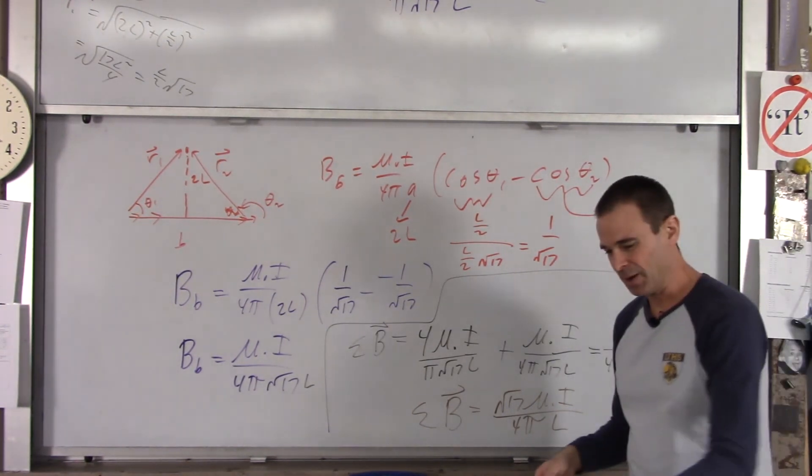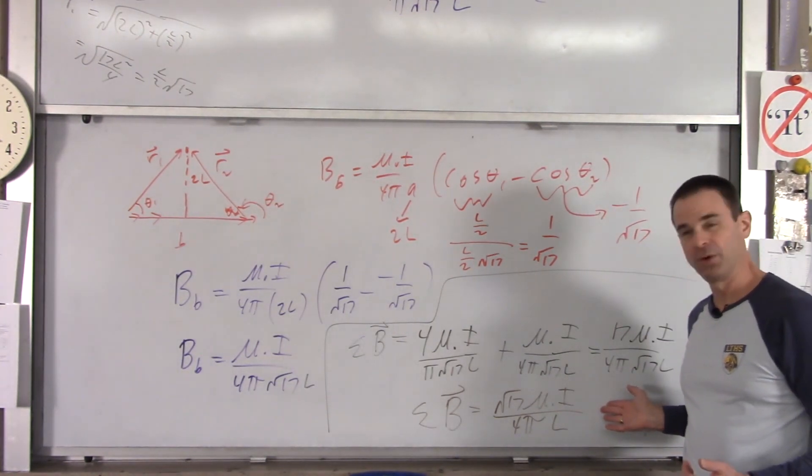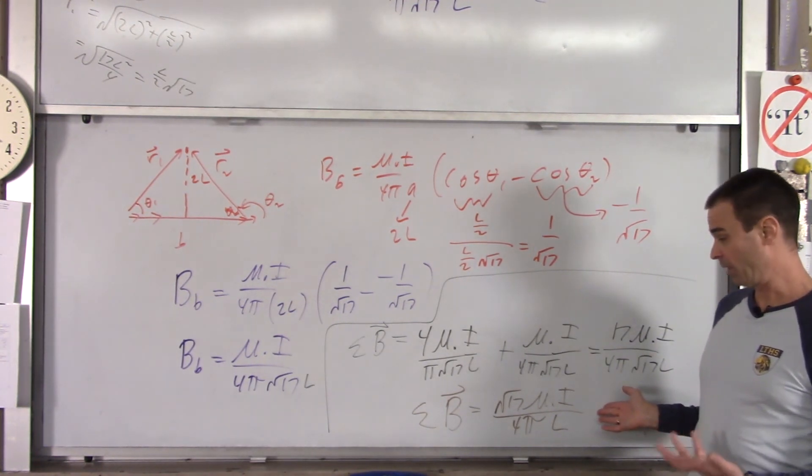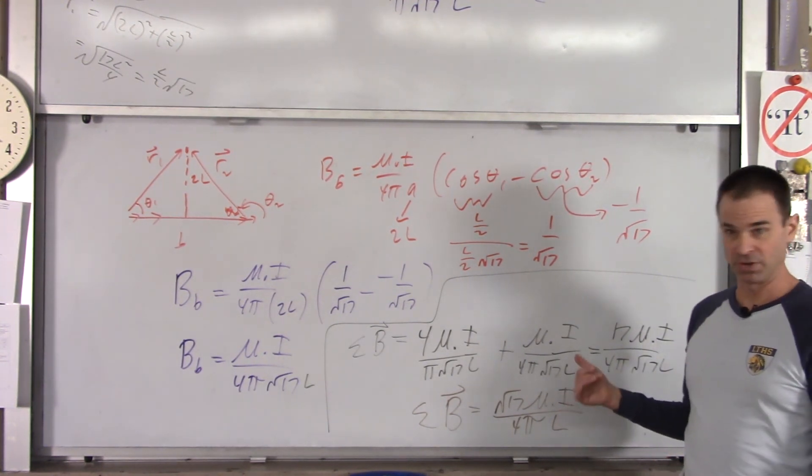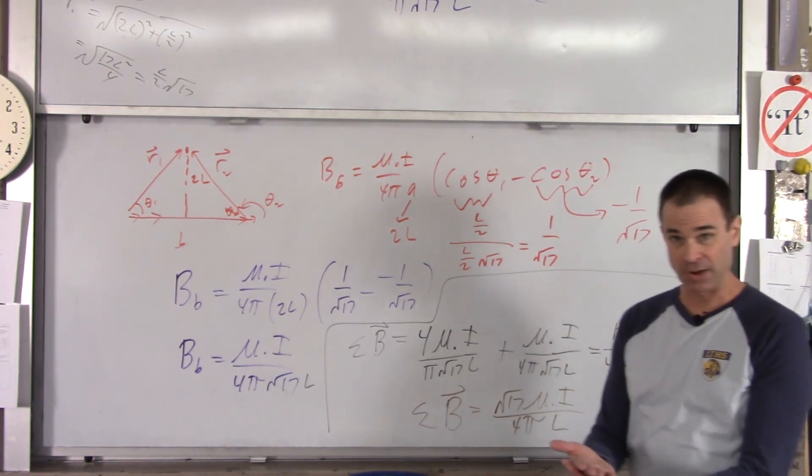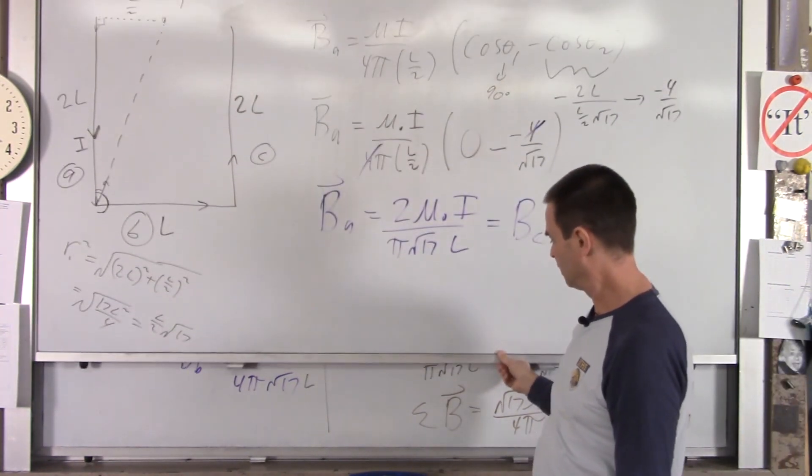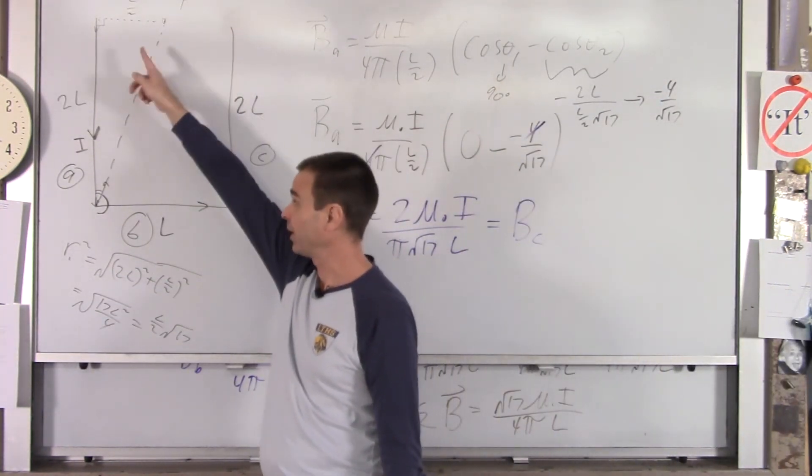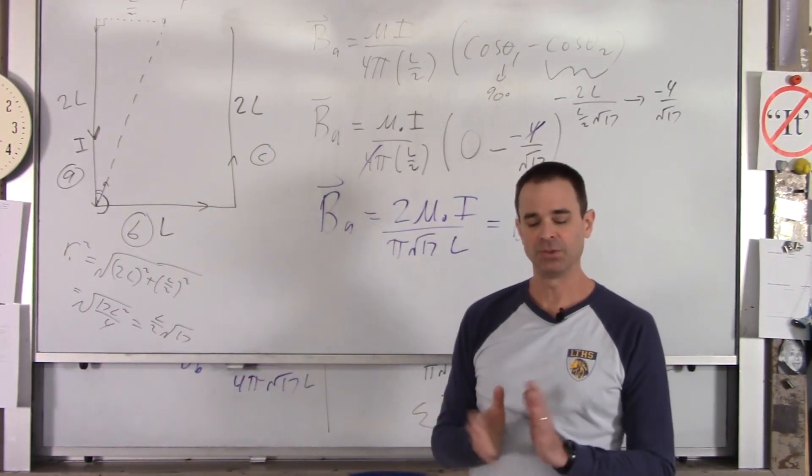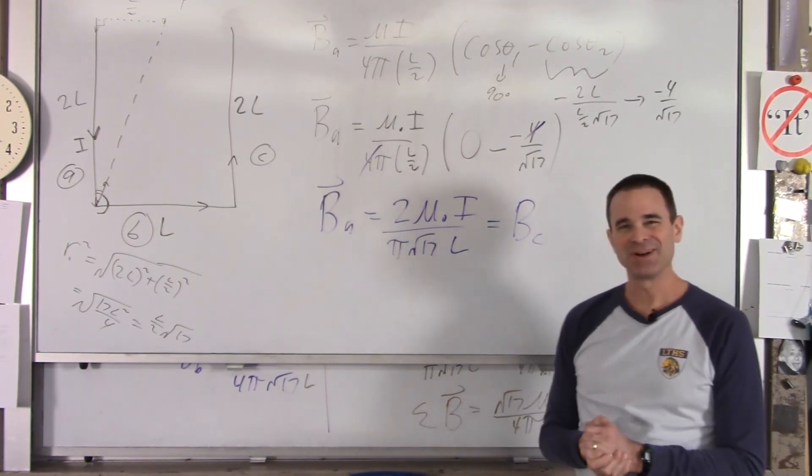So again, we're using the results of the Biot-Savart law to come up with a numerical answer. And at this point, if I gave you numbers for I and L, you'd get an actual value in your calculator. But to get a result for what is the magnetic field at that point created by this shape of wires. So again, we're using the result of the Biot-Savart law to figure that out. Hope that was helpful. Thank you very much.